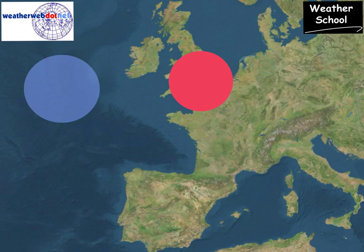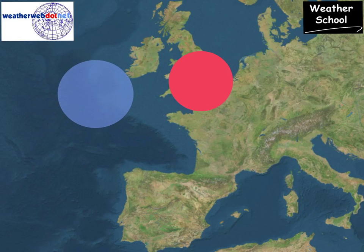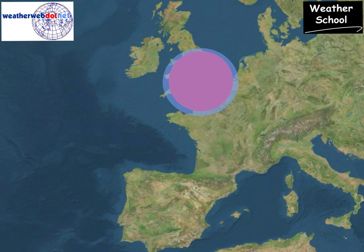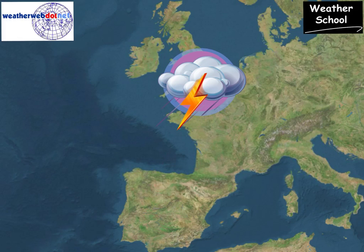So as this cooler air moves in at higher levels and interacts with the warmth at surface levels, we then get large cumulus and cumulonimbus clouds which form the familiar thunderstorms of the Spanish plume.